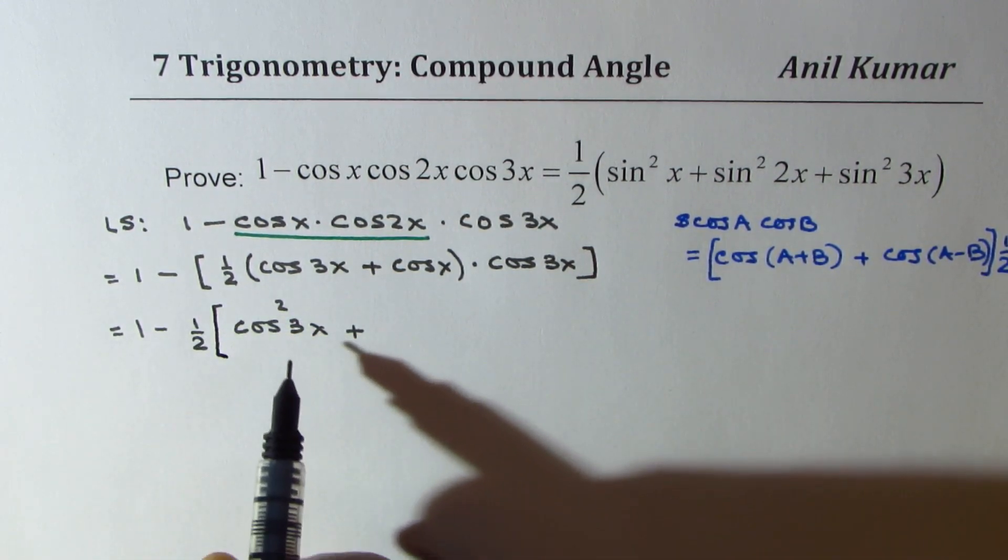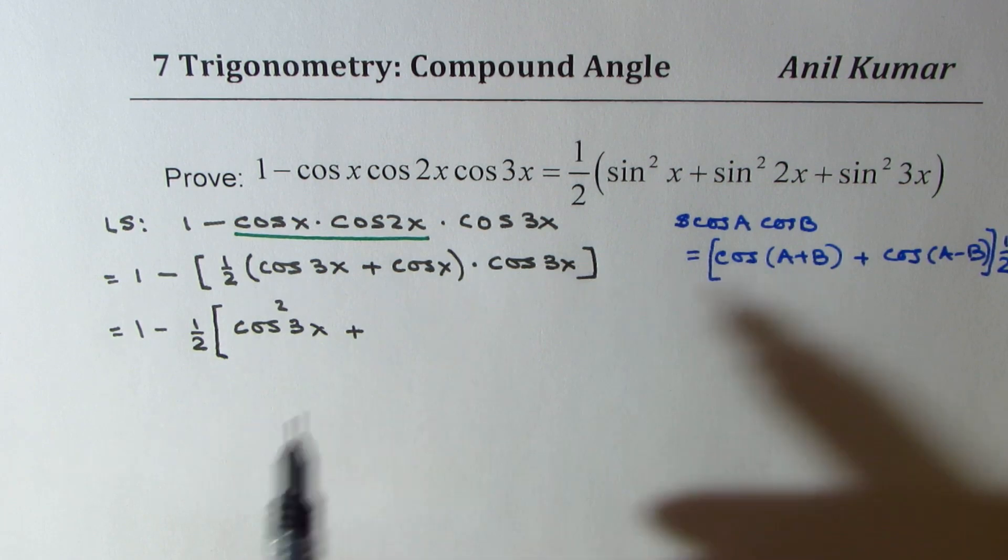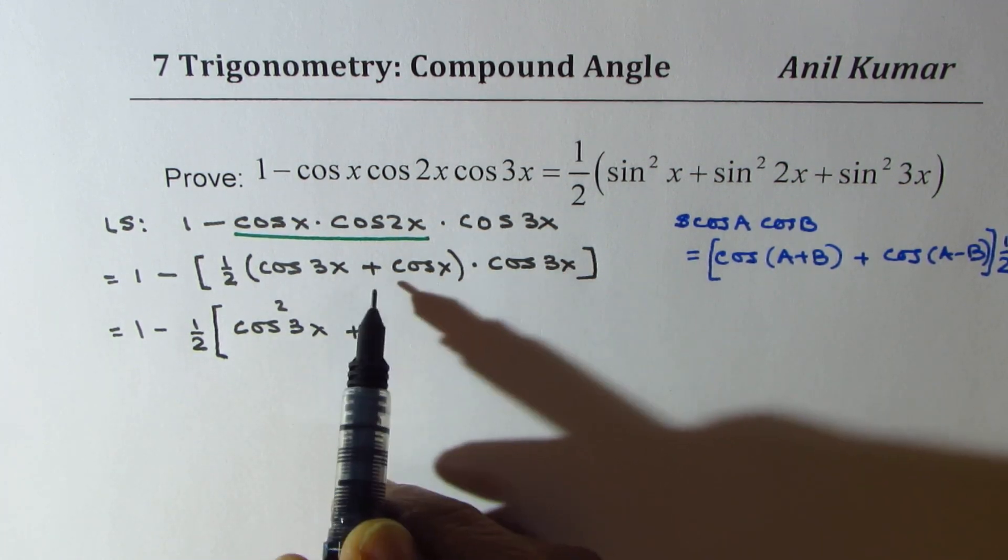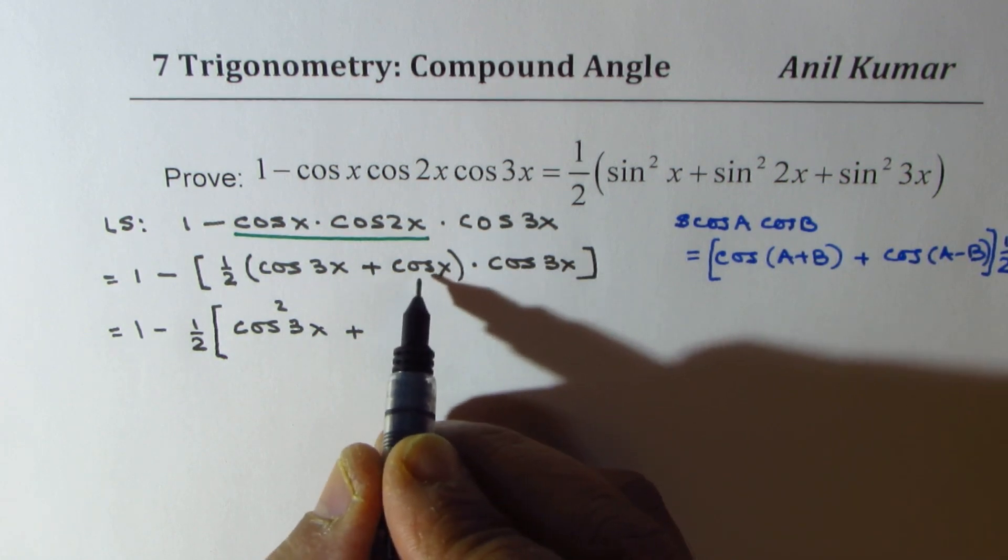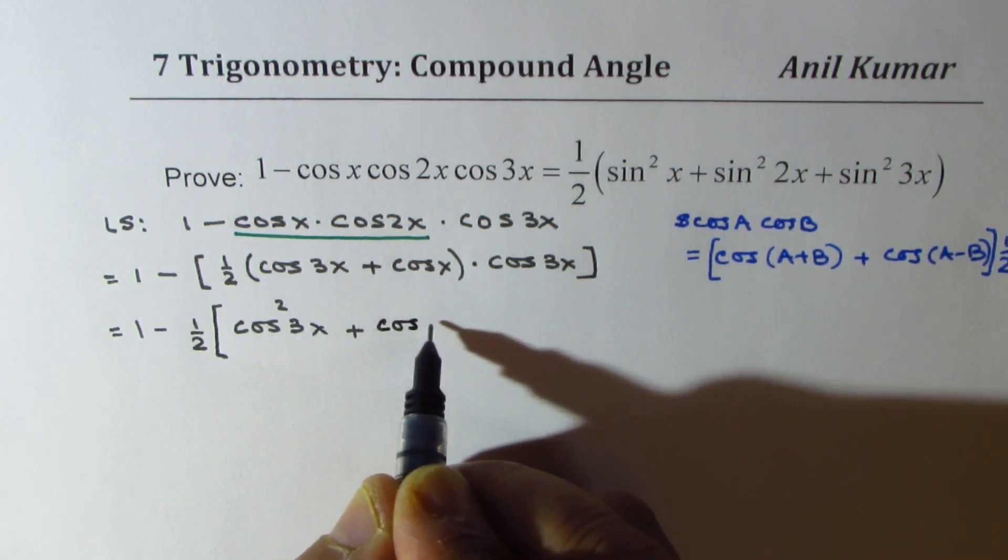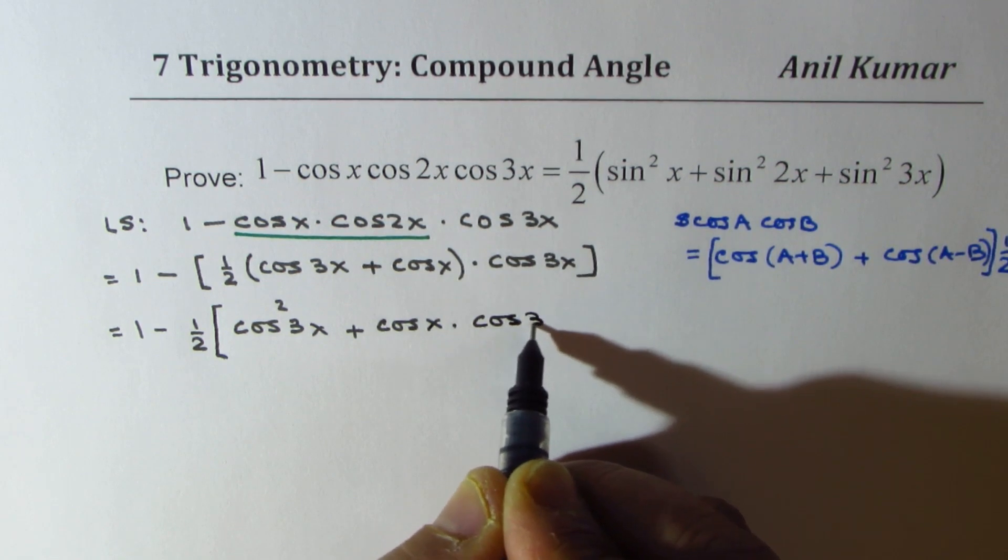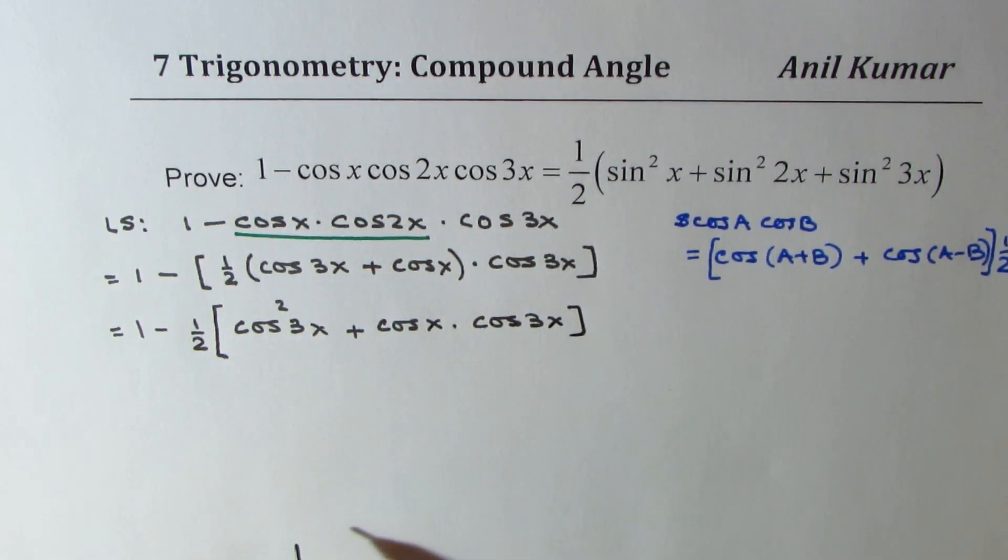Since this is just a product, we'll open and write this with half outside. That will be easier. We have cos x times cos 3x. So, I hope this step is clear.